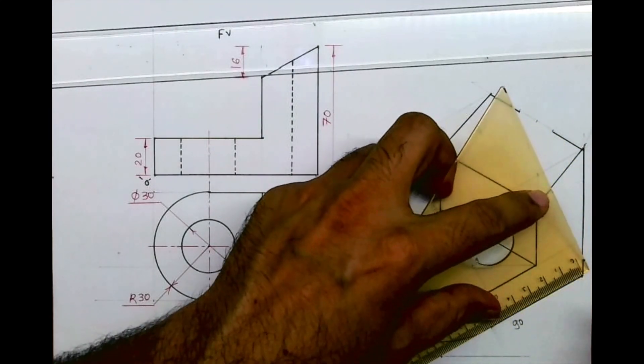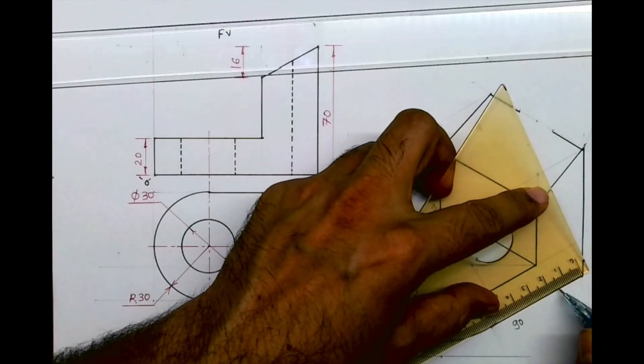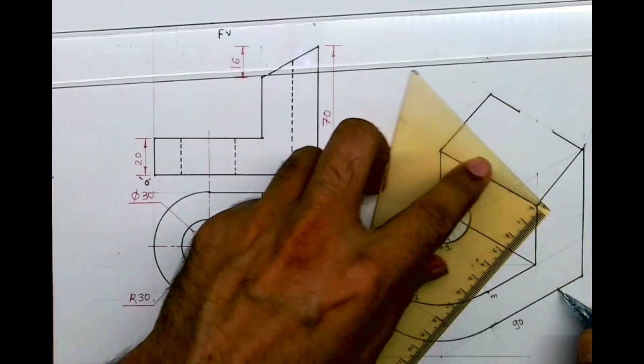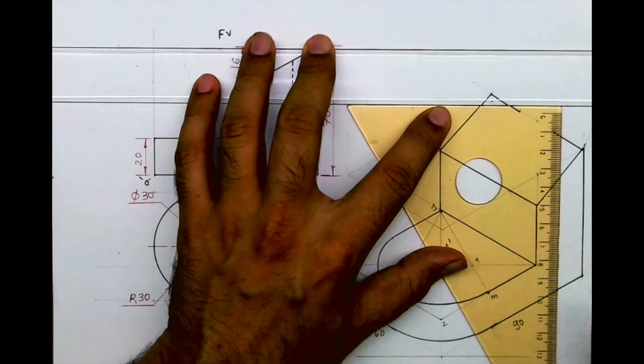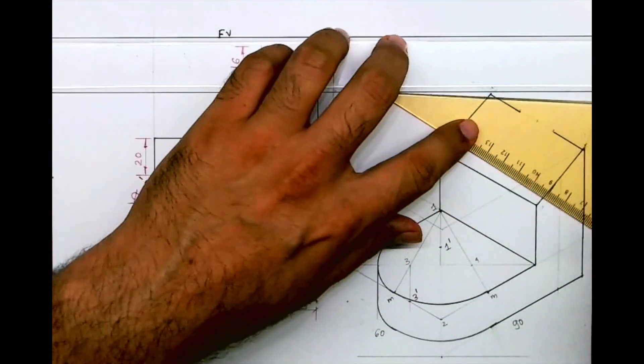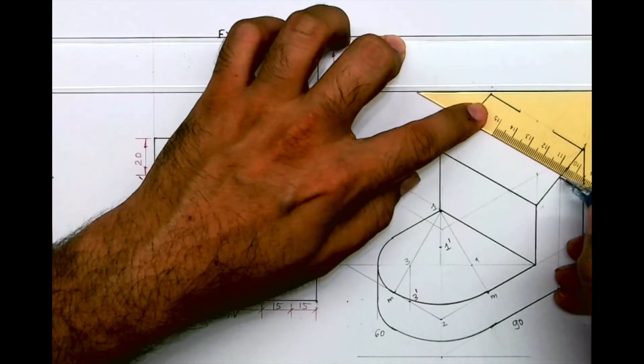If you see they have given 15, 15, so from here you can take 15 and then you go up. And then you can extend line like this.